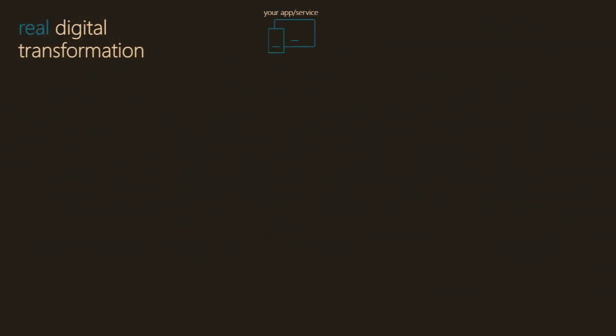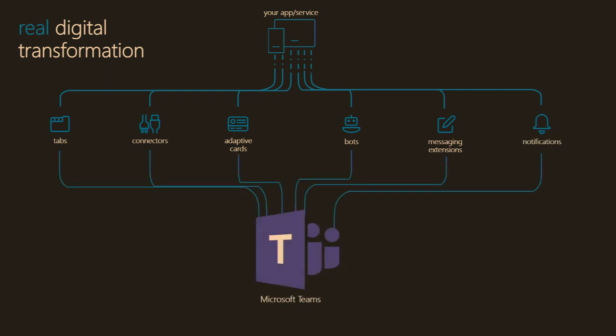If we think about what we can do with an application or service, we start with your app or service — built by you or a partner. We can then expand how we integrate that service into Microsoft Teams. There are different ways of interacting with these applications: we can have a tab where you view the application as if it were a website, and we can have connectors which pull information automatically from that application or service into a channel in Teams, letting you know what's going on with a push from the outside world in.